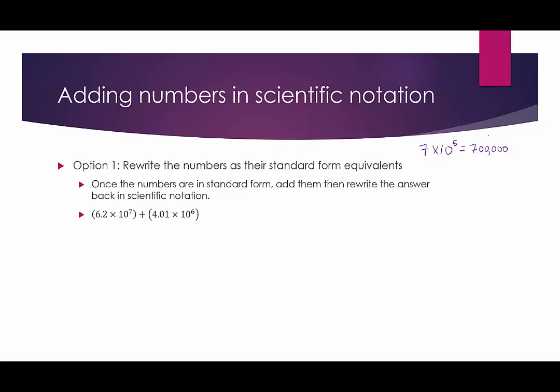For example, 6.2 times 10 to the seventh plus 4.01 times 10 to the sixth — we can't add the decimals right now because 10 to the seventh is not the same as 10 to the sixth. We write them in standard form: 6.2 times 10 to the seventh means moving the decimal seven places to the right — past the 2 and then six more zeros — giving 62,000,000.